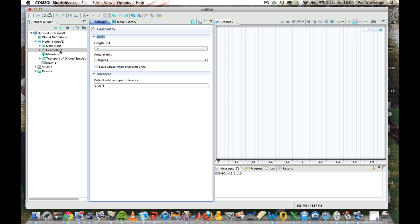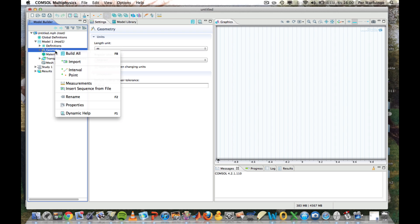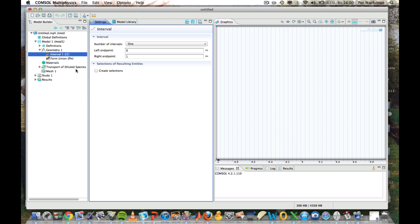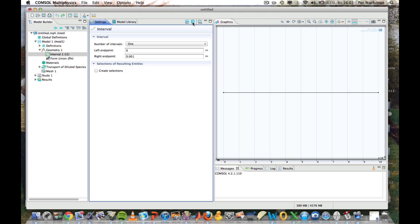Now it's time to define the geometry. We put the cursor over geometry, right-click, and get the opportunity to select interval. And we'll simply select a one millimeter interval. And then we'll build this geometry.